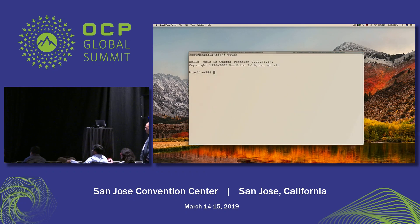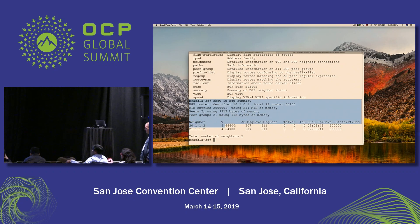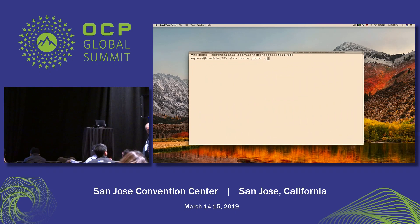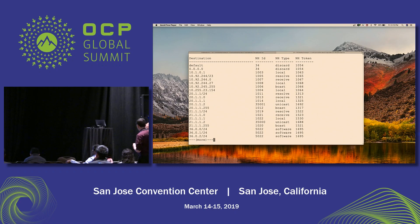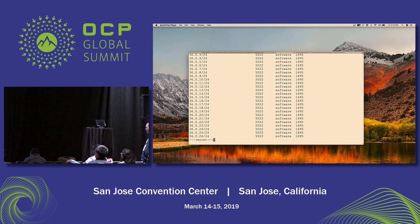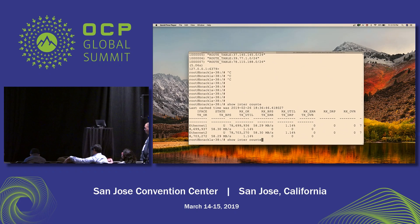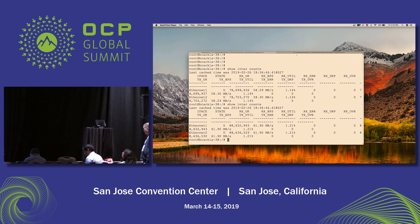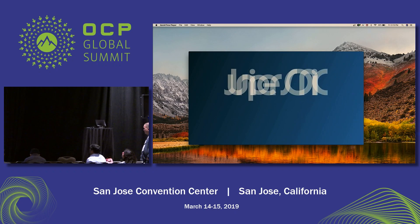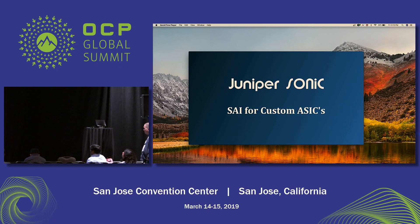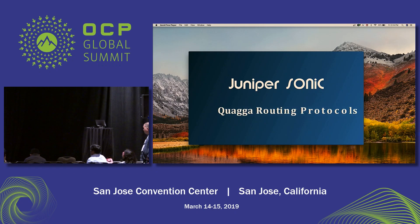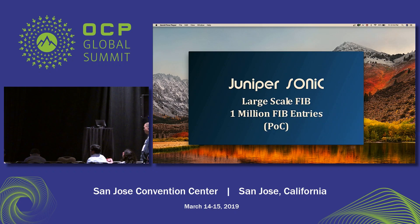Juniper SONiC also allows open-source Quagga if that is your preference. In the VTY shell, we see two established BGP sessions, prefixes as expected in the FIB, and network interface statistics for Ethernet 1 and Ethernet 2 increasing. Juniper SONiC offers several features: support for custom Juniper ASICs like the ZX chip, multi-PFE, CRPD routing protocols or Quagga routing protocols, and large-scale FIB. We demonstrated 1 million FIB entries in this video.